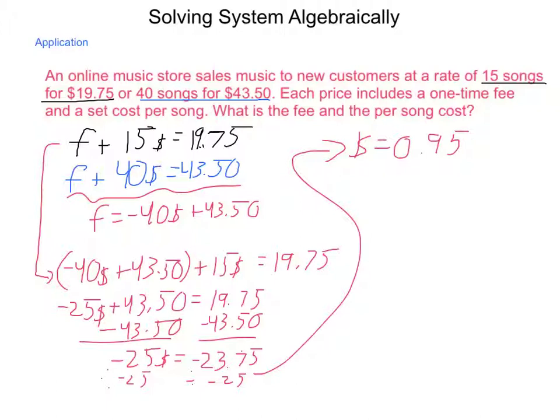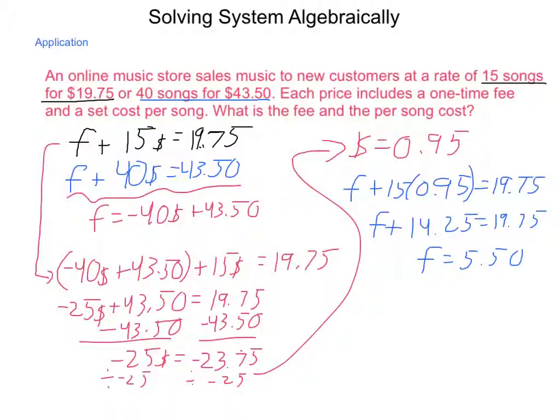We're going to take that and go F + 15 times the 95 cents = $19.75. Multiplying, we have F + 14.25 = $19.75. Subtracting that 14.25, we have F is $5.50. So to get yourself set up on this music plan, it's $5.50. And then each song is going to cost you 95 cents once you're up and going.